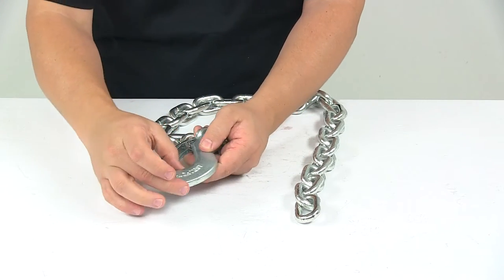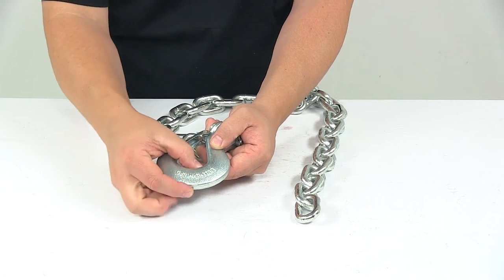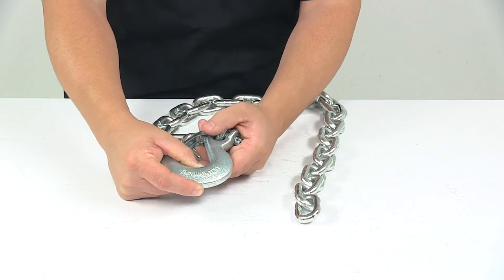And then the thickness of the actual clevis hook, from the bottom edge right here to the top edge, that portion right there has a thickness of about one and one eighth to one and three sixteenths of an inch thick.